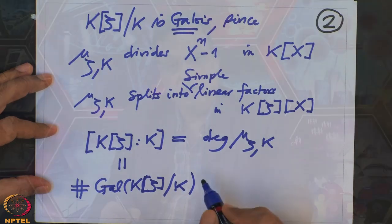In particular, I want to note that this Galois group is Abelian, and for K = ℚ I want to give the exact structure of this group. This is what we want to do now.